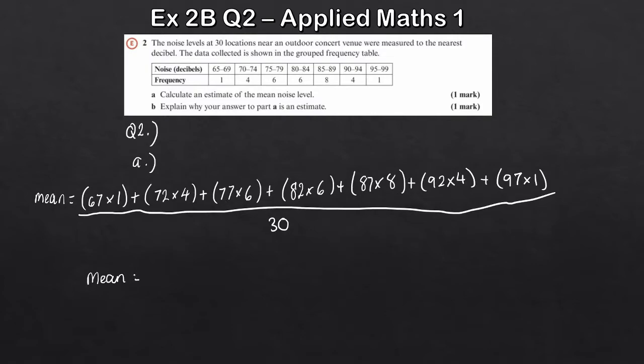So the mean. So the numerator, that comes to 2,470. We divide that by 30. So what does that give us? That's approximately, if you round it to a sensible accuracy, you get 82.3 there. And if we put this into context, what we're looking at, we're looking at the decibels and noise, some concert. So this is 82.3 decibels. So that's part A.